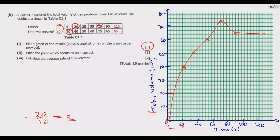For Loma N2, circle the point which seems to be incorrect. Looking at the graph critically, the point at (70, 75) appears to be off — the total volume should be increasing and then leveling off at 65, not rising to 75 before dropping. Ideally the graph should plateau at 65 and remain constant. Hence that point at 75 is the anomalous incorrect point.